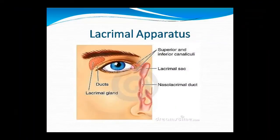The next structure is the lacrimal apparatus. There is a lacrimal gland and duct. The secretion of the lacrimal gland drains through the superior and inferior canaliculi, into the lacrimal sac, and then into the nasolacrimal duct.